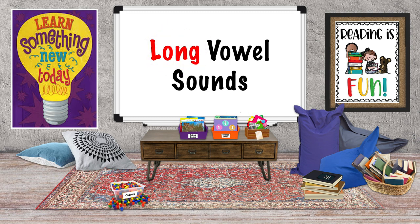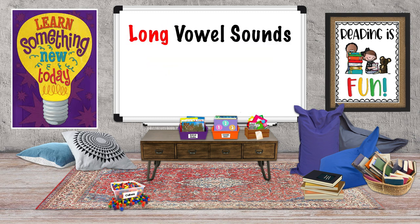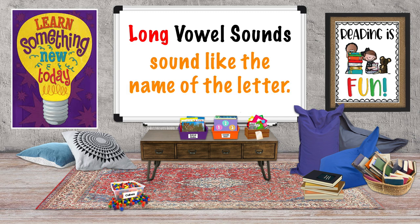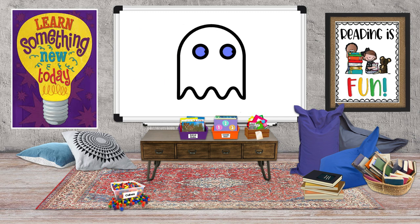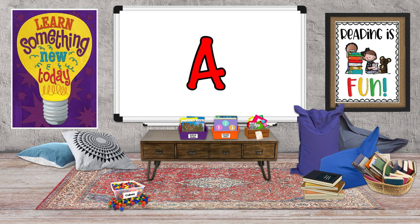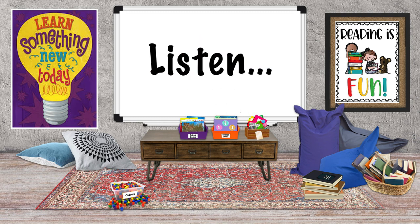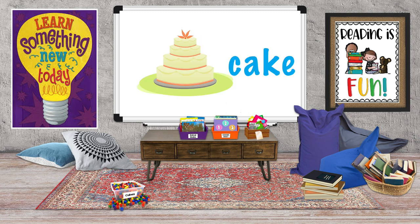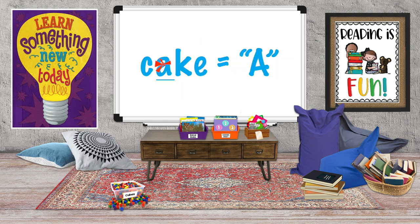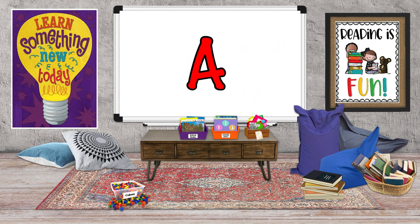Now let's take a listen to the long vowel sounds. One way of remembering long vowel sounds is that they sound like the name of the letter. Let's look at the long vowel sounds. First, long A — listen to the word 'cake.' Long A makes the 'ay' sound, just like the name of the letter.